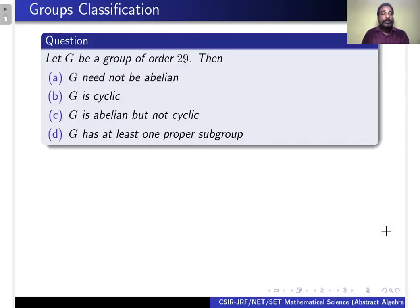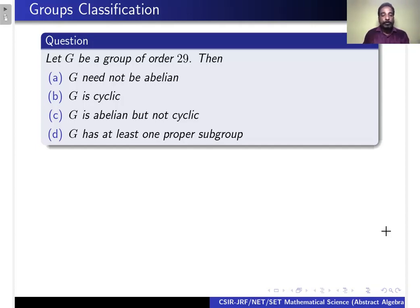The first question is: let G be a group of order 29. The options are: G need not be abelian; G is cyclic; G is abelian but not cyclic; G has at least one proper subgroup.